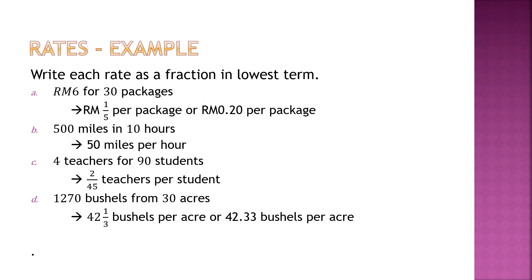Write each rate as a fraction in lowest form. For example, RM6 for 30 packages gives RM1 over 5 per package. For 500 miles in 10 hours, you find what one hour equals — that is how you find the rate in lowest form, which we also call unit rate. So 500 miles in 10 hours equals 50 miles per hour. For four teachers for 90 students, that's 4 over 90. For 1,270 bushels for 30 acres, you get 42 and one-third bushels per acre — just divide both values.